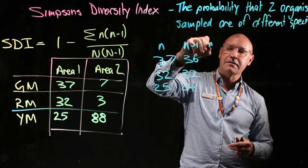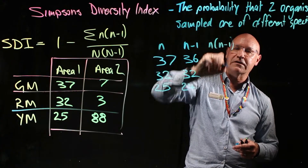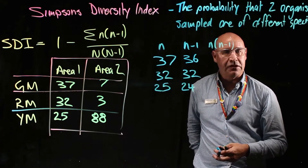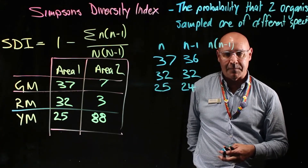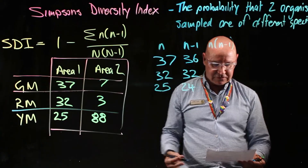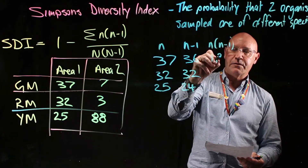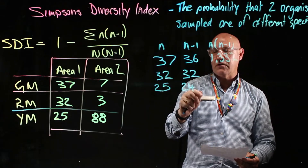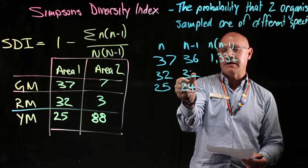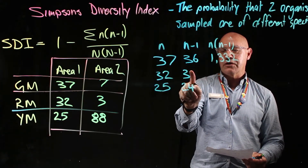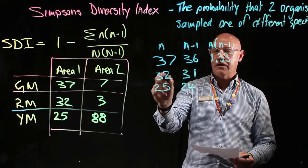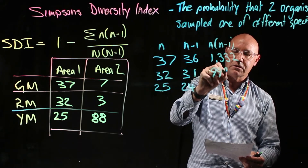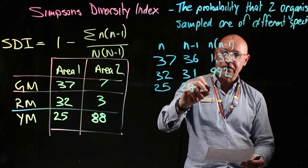The next step is n times (n minus one). So that's each n multiplied by its corresponding n minus one. 37 times 36 is 1332. 32 times 31 is 992 — I made a mistake there, which is why we need to be really systematic. 25 times 24 is 600.